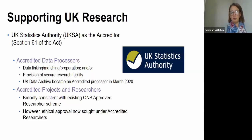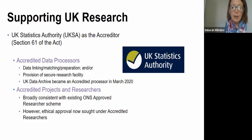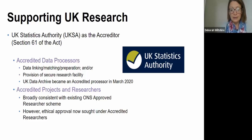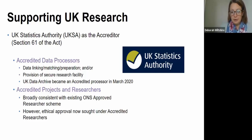An accredited processor's role is to carry out data linking, matching, preparation, and/or provide secure research facilities. For accredited projects and researchers — if you've already accessed data through the ONS, you'll be familiar with the Approved Researcher Scheme. The accredited projects and researchers framework is broadly consistent with that. One of the main differences is that ethical approval is now sought under accredited researchers.